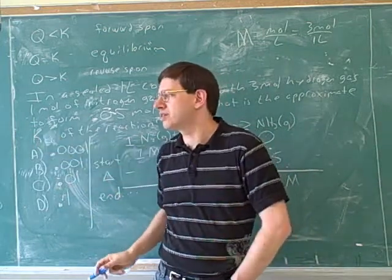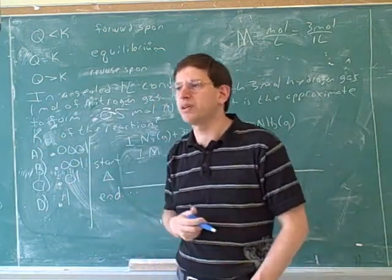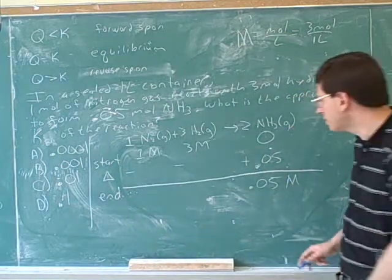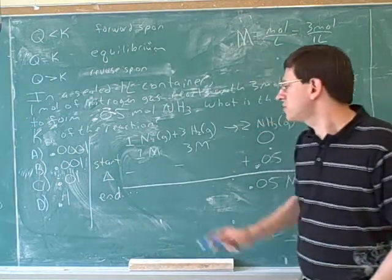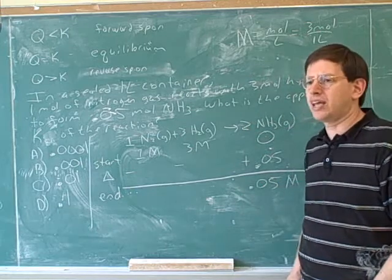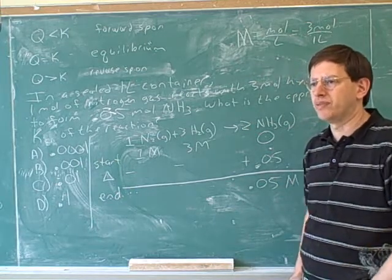We would never use an equilibrium constant for a reaction that goes to completion, and we would never use a limiting reagent for a reaction that goes to equilibrium. Okay. So again, which of these rows would we use to calculate the equilibrium constant? The last one.